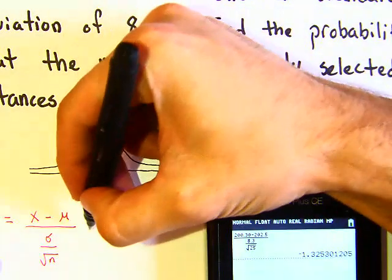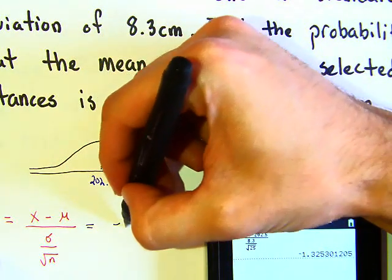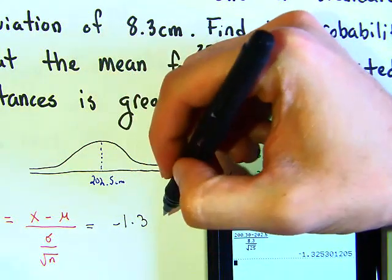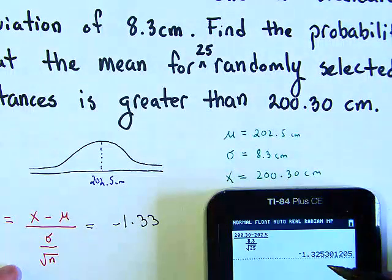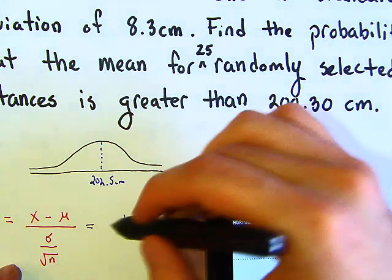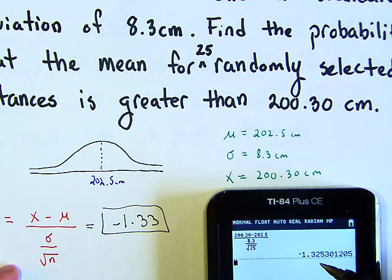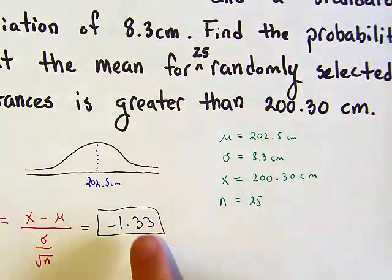So my z value is negative 1.3, and I'll say 3-3 because this 5 is saying that we need to round this up. So it's negative 1.33.